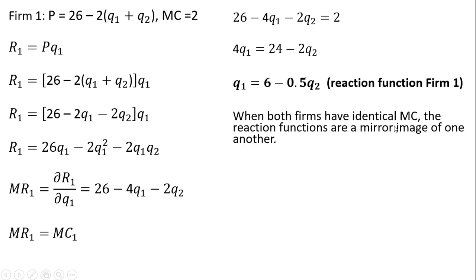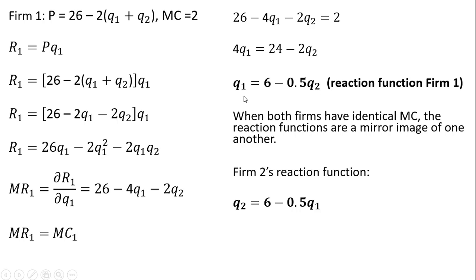When both firms have identical marginal cost — and only when both firms have identical marginal cost structures — the reaction functions are going to be a mirror image of one another. So firm 2's reaction function will be the mirror image of firm 1's: just reverse the subscripts. Where you see a 1, plug in a 2; where you see a 2, plug in a 1. That is a shortcut method to get firm 2's reaction function when both firms have identical marginal cost structures.